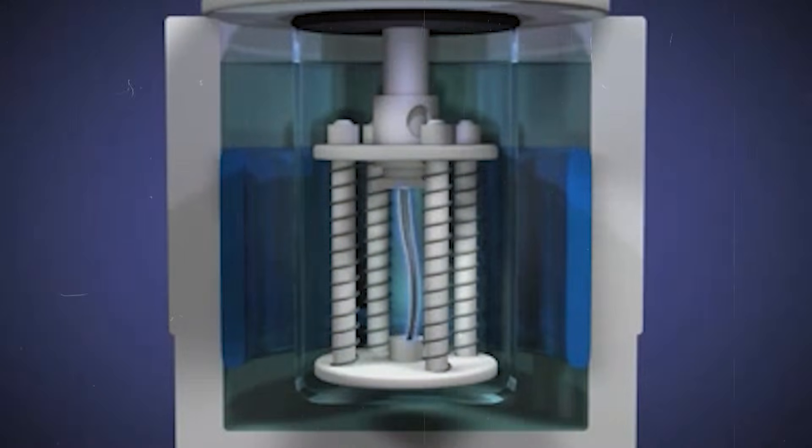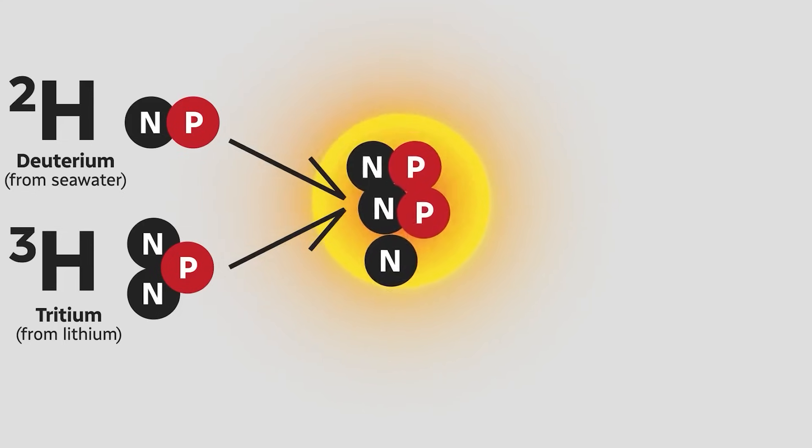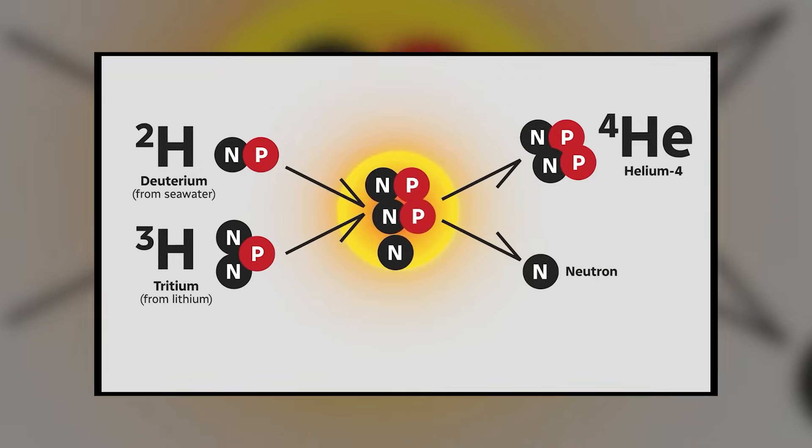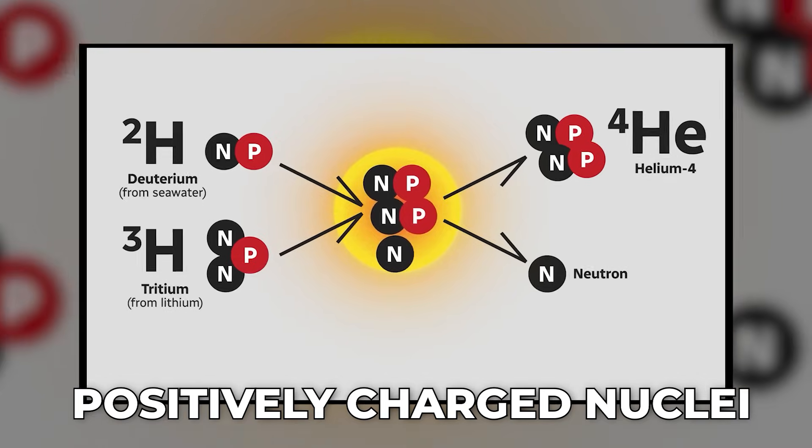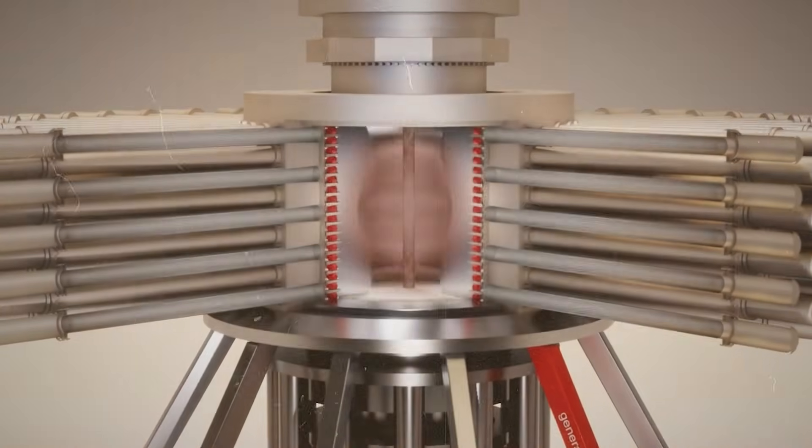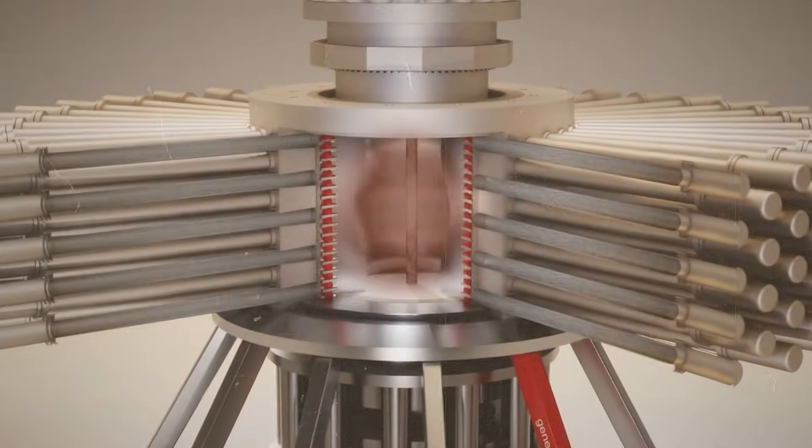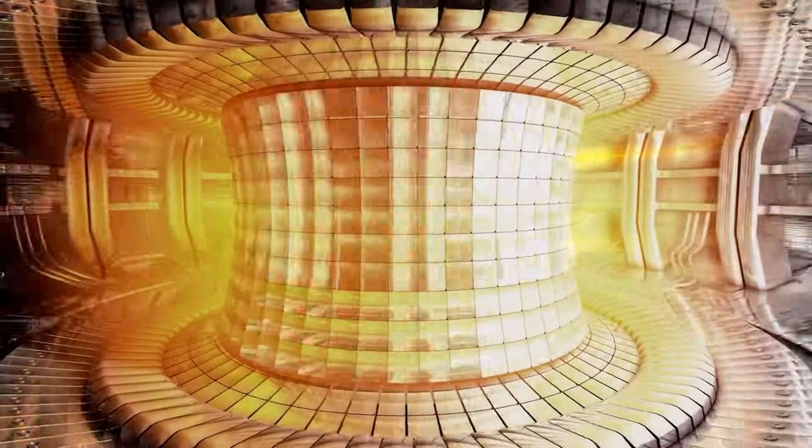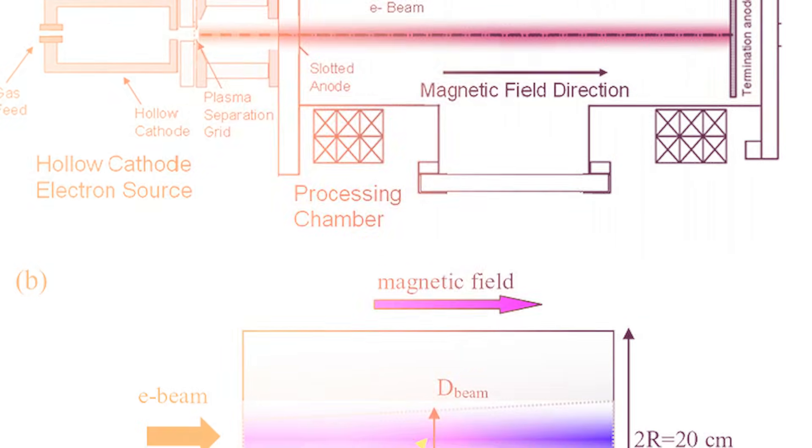At the center of the puzzle is the Coulomb barrier, the natural electrical repulsion between positively charged nuclei. In stars, immense pressure and heat push nuclei close enough to fuse. In laboratories, traditional fusion tries to do the same with plasma, vacuum chambers, and magnetic fields. LENR proposes that a solid metal lattice might change the game.